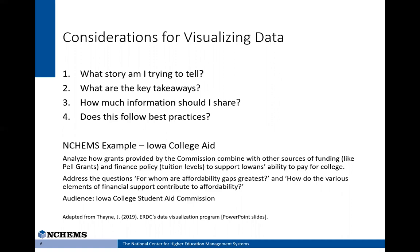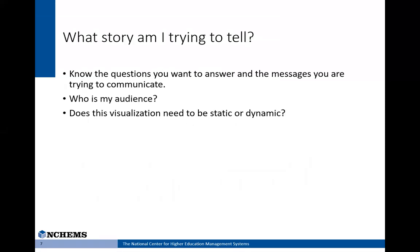I'll be covering each of these points in more detail, highlighting examples from a project we worked on here at NCHEMS for the Iowa College Aid Commission. The commission asked us to develop visualizations to analyze how grants support Iowa's ability to pay for college in combination with other sources of funding and tuition levels. We also wanted to answer questions such as: for whom are affordability gaps greatest, and how do the various elements of financial support contribute to affordability? Our audience was the commission itself, so they could use our analyses to reconsider their policies.